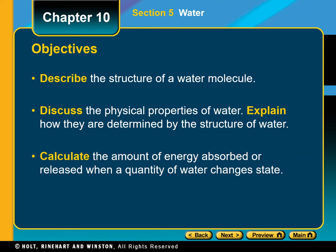Water is a familiar substance in all three physical states: solid, liquid, and gas. On Earth, water is by far the most abundant liquid. Oceans, rivers, and lakes cover about 75% of Earth's surface.